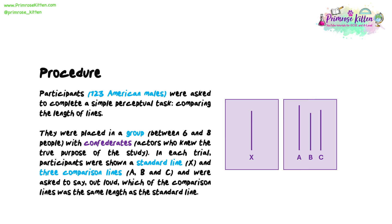Procedure. Participants — 123 American males — were asked to complete a simple perceptual task, comparing the length of lines. They were placed in a group of between six and eight people with confederates, actors who knew the true purpose of the study. In each trial, participants were shown a standard line, shown here in the diagram as X, and three comparison lines, shown as A, B and C,